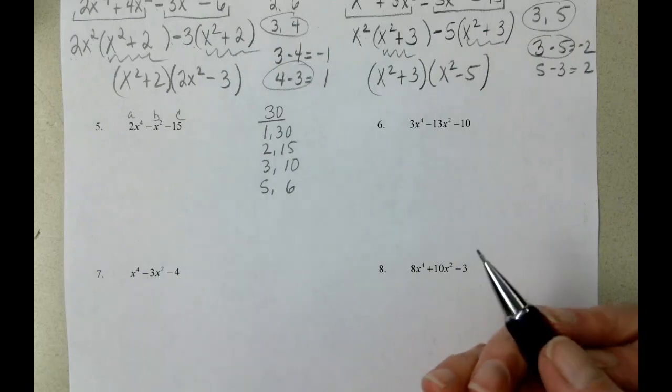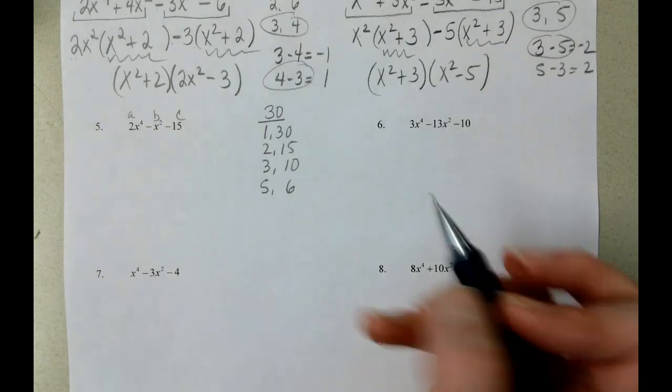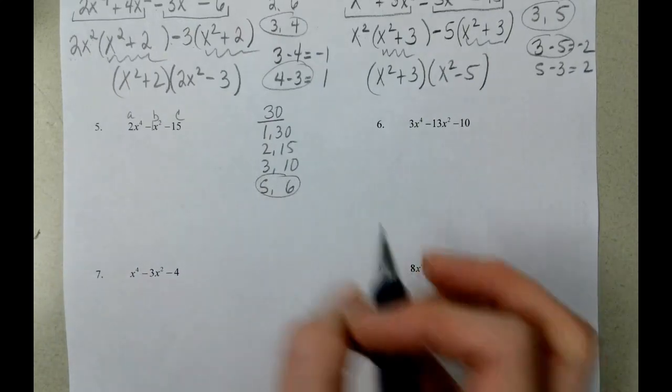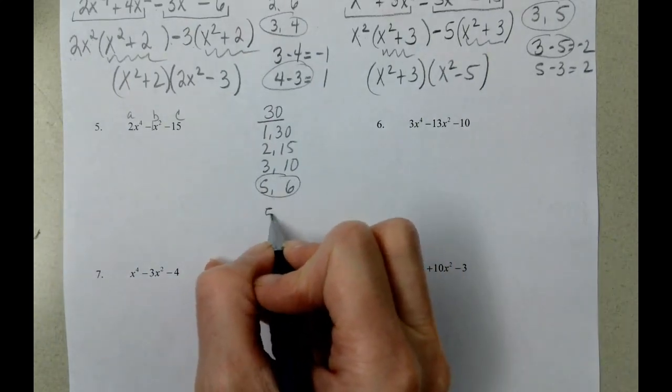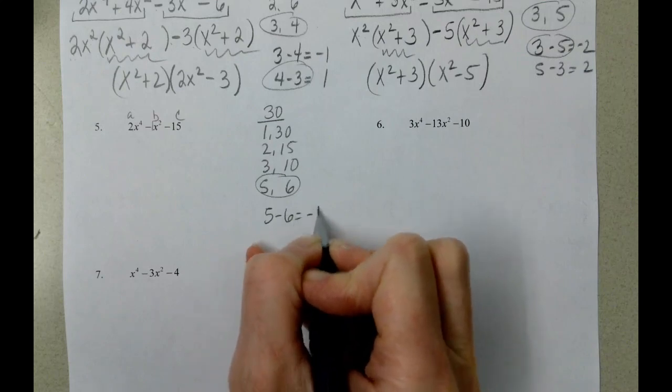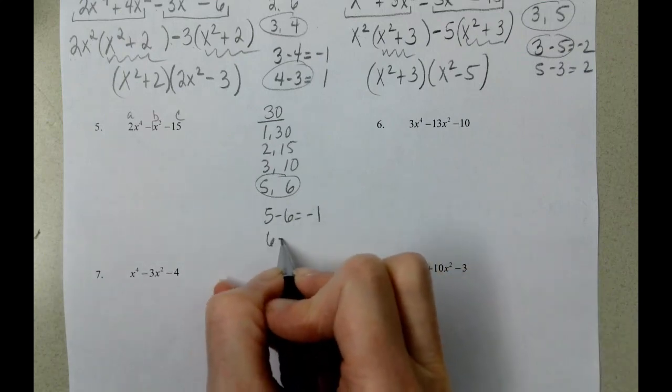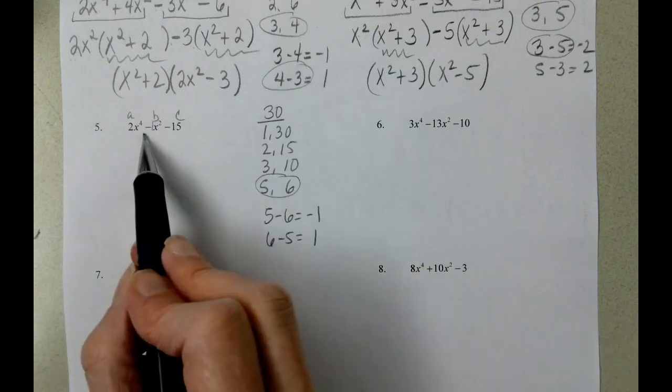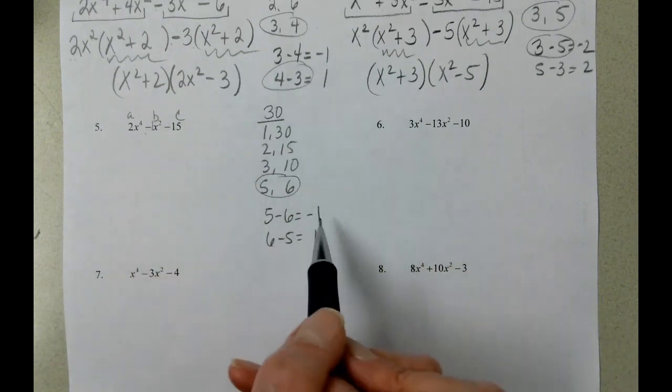Will any of those combine, either add or subtract, to be 1? That's going to be our 5 and 6 here. We can do 5 minus 6, which equals negative 1, or 6 minus 5, which equals positive 1. We need negative 1, so we're going to use the first one.